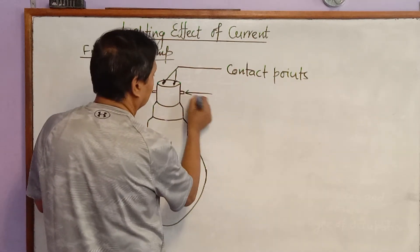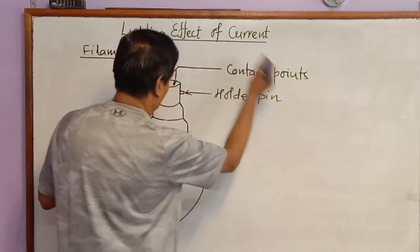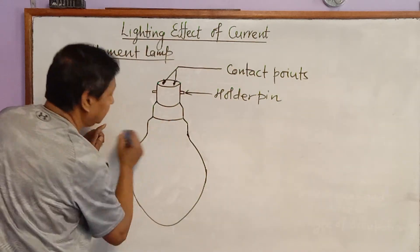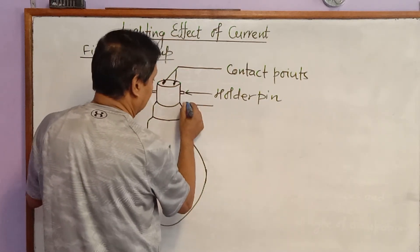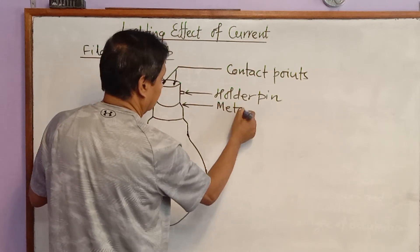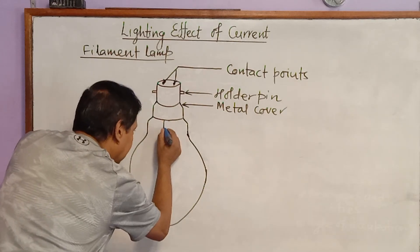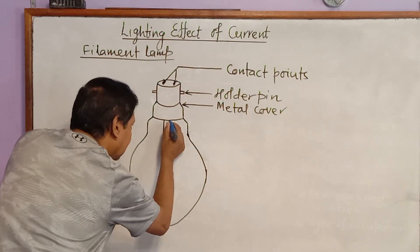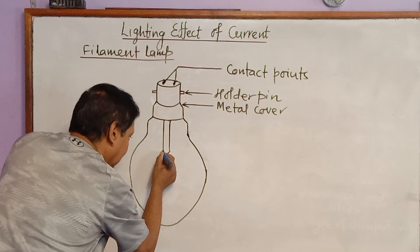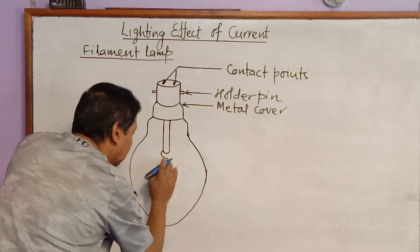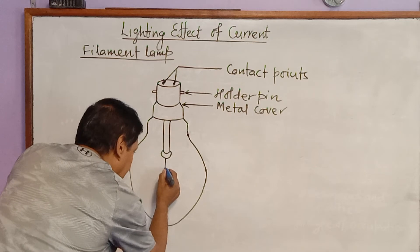And this is made up of metal copper. Now here it is thick glass, and it goes inside the glass bulb, it goes inside the glass bulb up to more or less the central part.